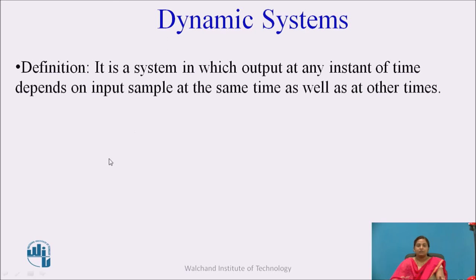The dynamic system is one in which the output at any instant of time depends on input samples at the same time as well as at other times. The output may depend on the present as well as past and future input values. Systems where the output depends on present, past, or future inputs are called dynamic systems.